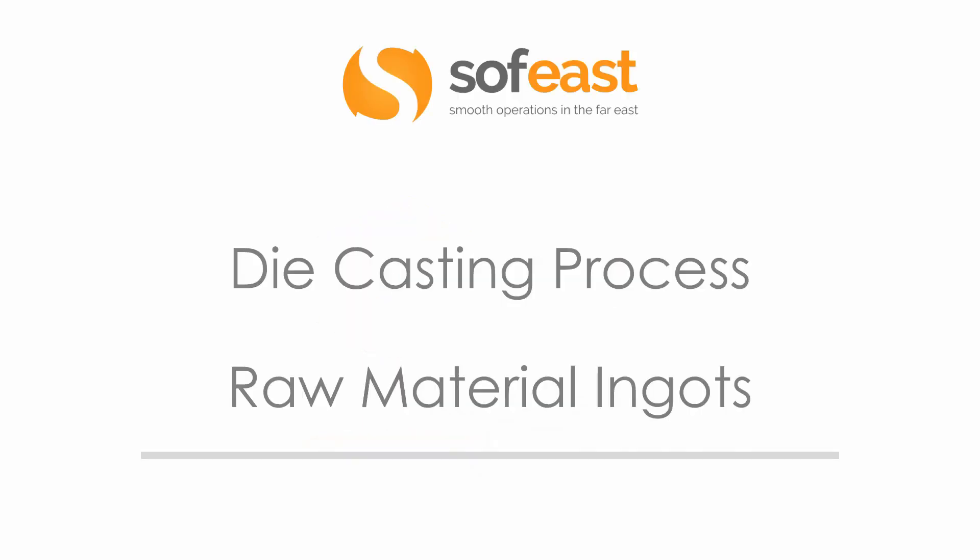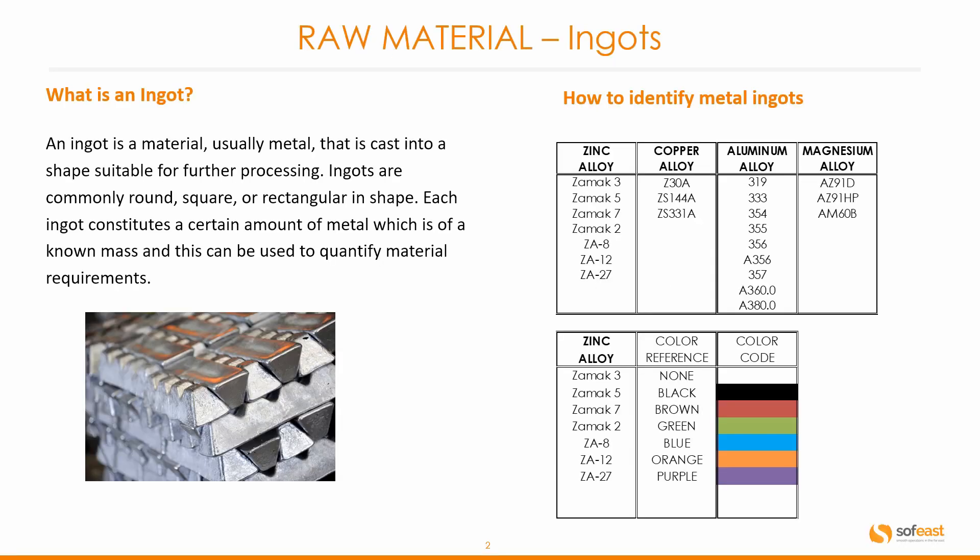Welcome to this video where we're going to be talking about the die casting process. In this video we're going to be focusing on the raw material ingots. An ingot is a material, usually metal, that is cast into a shape suitable for further processing. Ingots are commonly round, square, or rectangular in shape. You can see some examples in this image. Each ingot consists of a certain amount of metal of a known mass, which can be used to quantify material requirements.